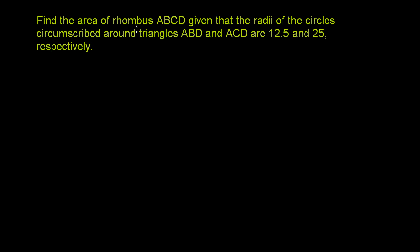Find the area of rhombus ABCD given that the radii of the circles circumscribed about triangles ABD and ACD are 12.5 and 25 respectively.